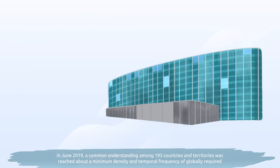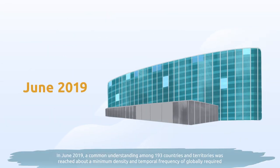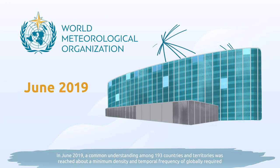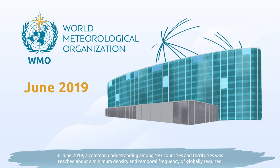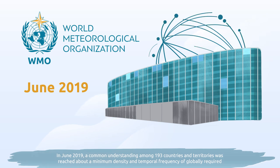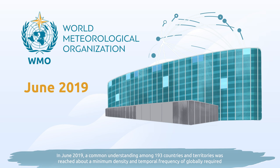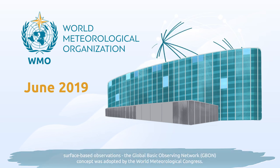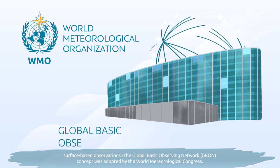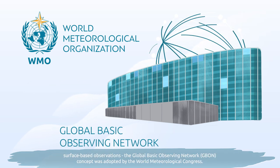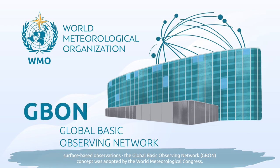In June 2019, a common understanding among 193 countries and territories was reached about a minimum density and temporal frequency of globally required surface-based observations. The Global Basic Observing Network was adopted by the World Meteorological Congress.